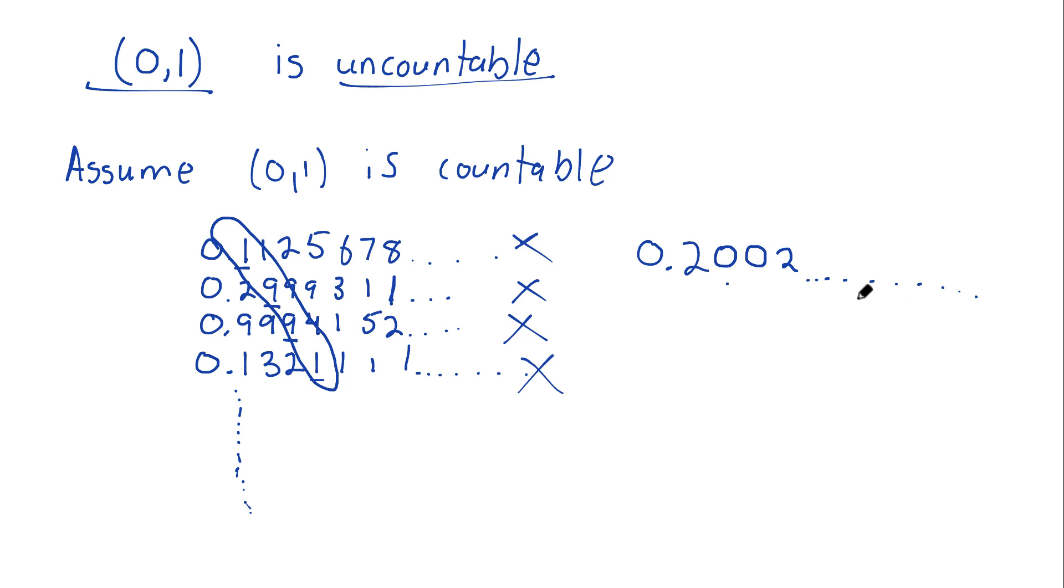So I wrote a list of all the numbers but then I found a number that wasn't on the list. Oh man, this is such a contradiction here - contradiction. And so our assumption was incorrect that the set was countable. We must conclude that it's uncountable.